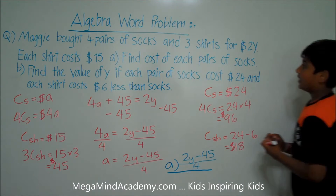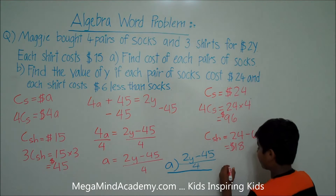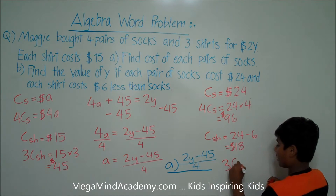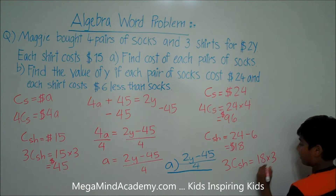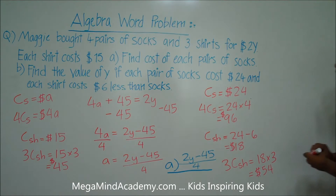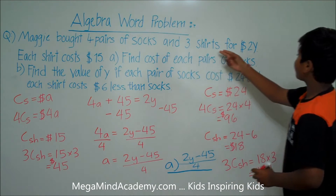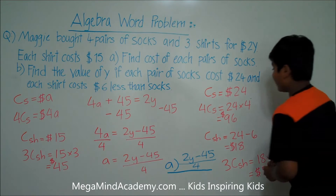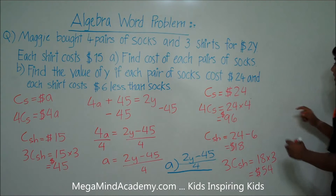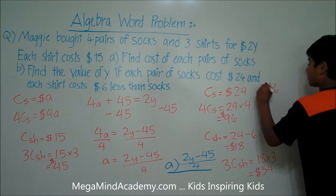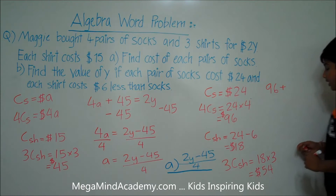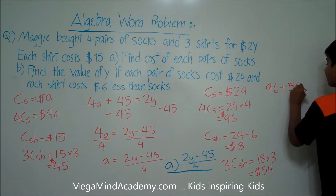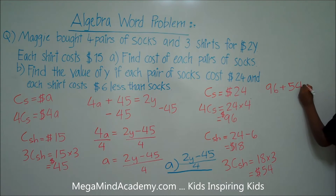We know Maggie bought three shirts, so the cost of three shirts is eighteen dollars times three, which equals fifty-four dollars. And Maggie bought four pairs of socks for twenty-four dollars each, so four pairs equals ninety-six dollars. Since she bought four pairs of socks and three shirts for 2Y dollars: ninety-six dollars plus fifty-four dollars equals 2Y.